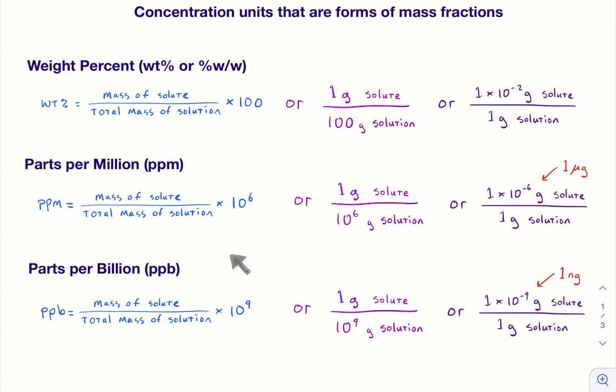Sometimes you'll also see ppt, and usually that means part per trillion, so 10 to the 12th. But sometimes that might mean part per thousand, so I don't like using that number. If you see it, you should double check what they actually mean.